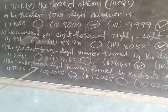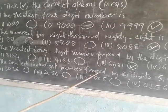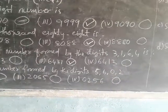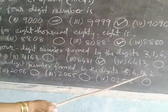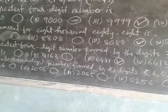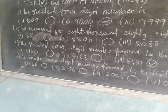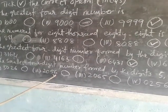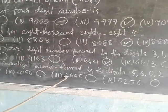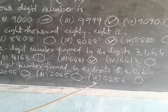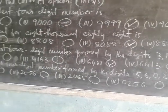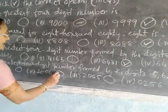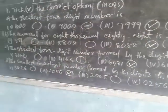Then D: the smallest four-digit number formed by the digits five, six, zero, two. Option one is one thousand five hundred and two — no. Option two is two thousand and fifty-six. Option three is two thousand and sixty-five. Option four is zero two five six. Which one is correct? Two, zero, five, six — that is the second option. You put the tick for question one D in the second option.